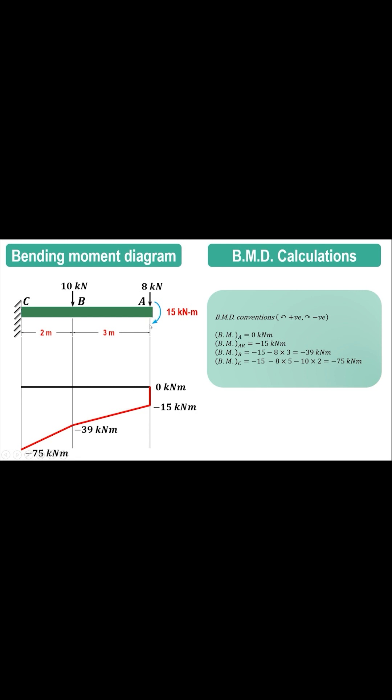So 8 kN force will go in the clockwise direction towards B. So it is 8 into 3, that is 24, and already there is a clockwise moment of 15 kN meter. So minus 15 minus 24, that is minus 39 kN meter.